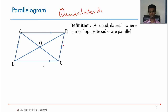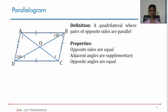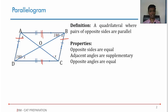In any parallelogram, keep in mind: the opposite sides are equal — these two sides will be equal, these two will be equal. Opposite angles are equal — these two are equal, these two will be equal. All pairs of adjacent angles will be supplementary: these two add up to 180, these two add up to 180, these two add up to 180, these two add up to 180.